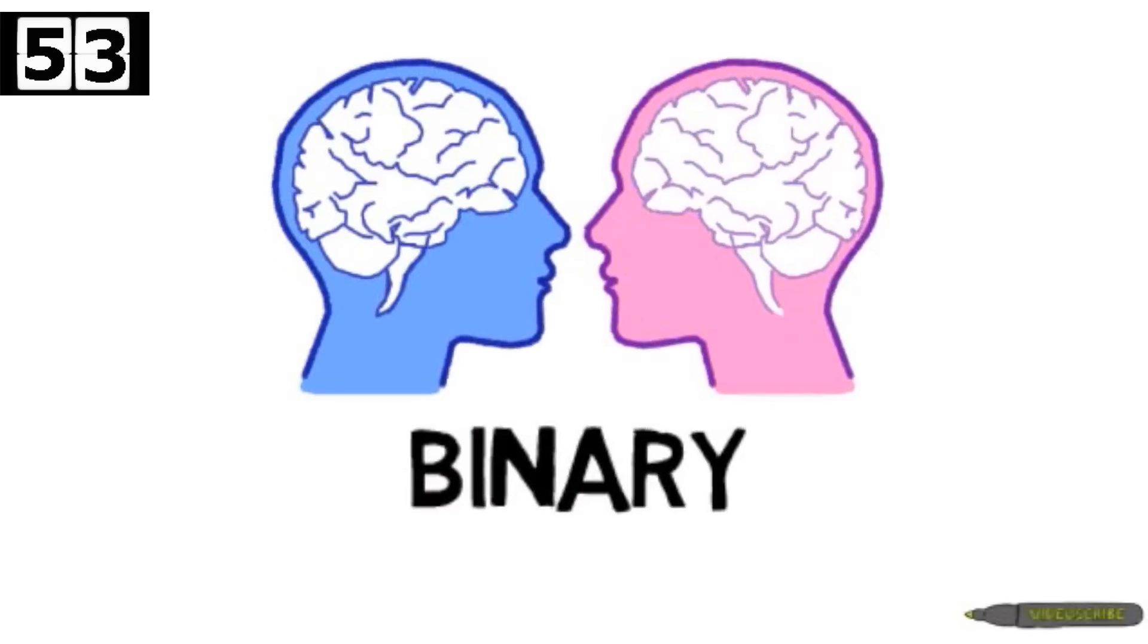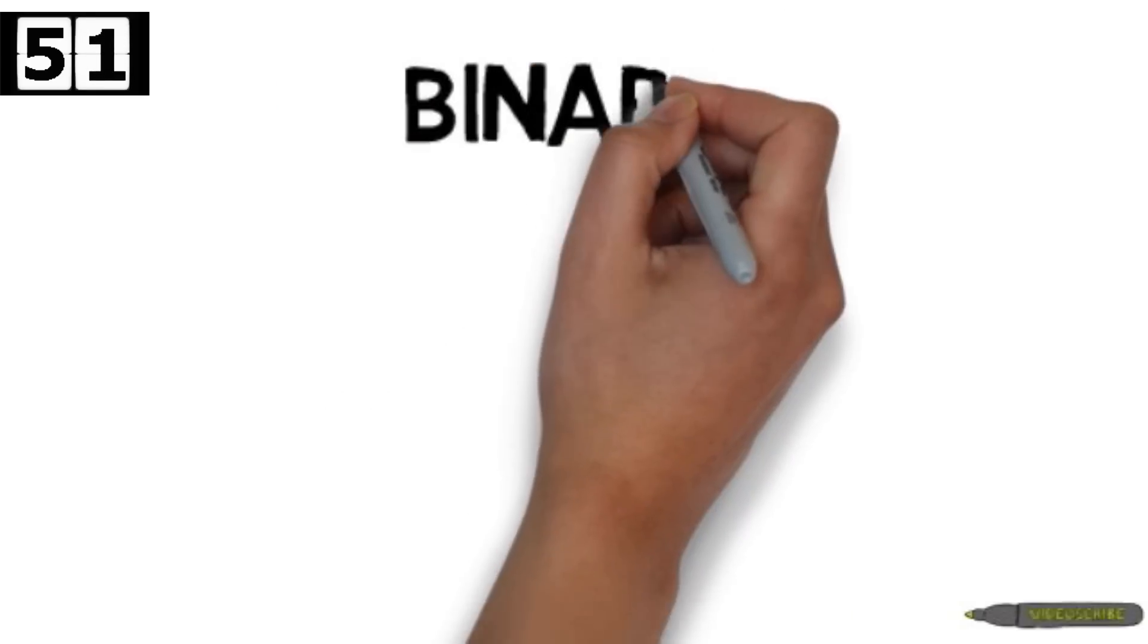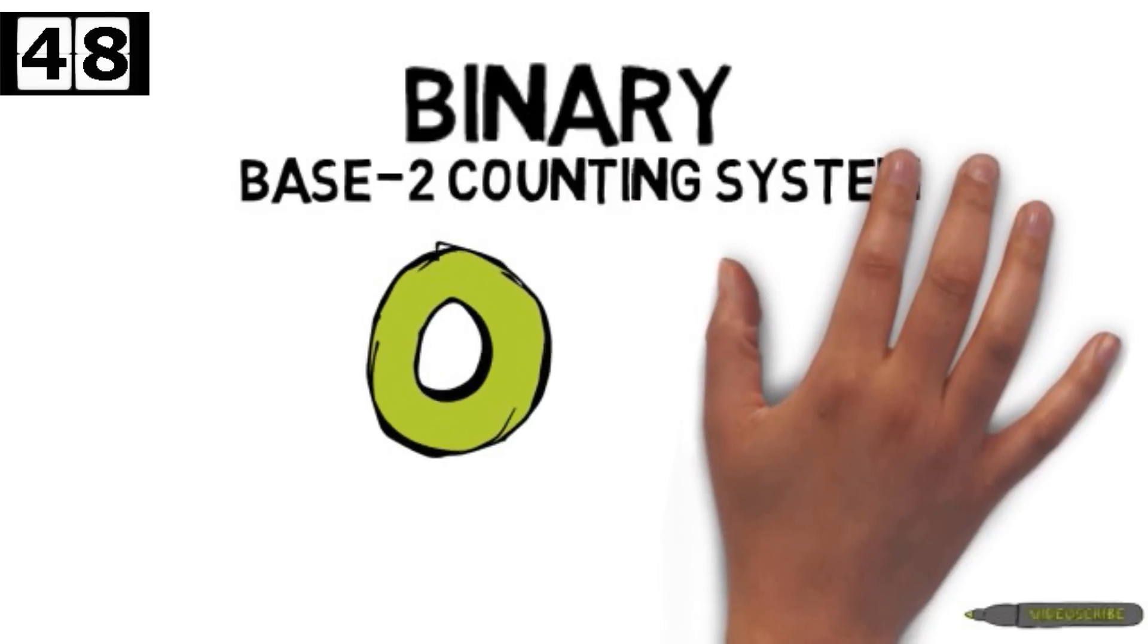First off we need to know that binary is a base 2 counting system. This means we use two symbols, 0 and 1.